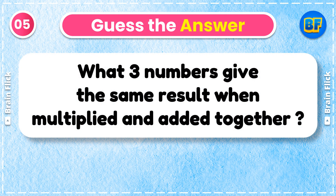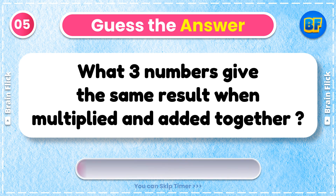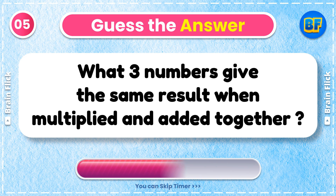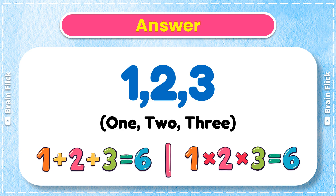Riddle 5. What 3 numbers give the same result when multiplied and added together? Answer: 1, 2, and 3.